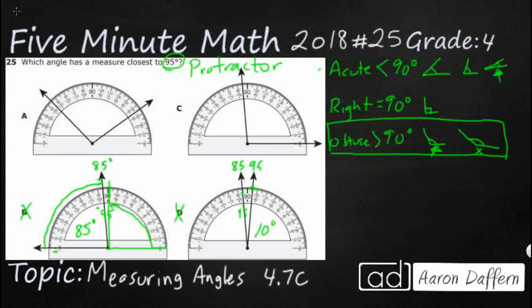So we're down to A or C. Let's start with A. Using both scales: on the outside the angle reads between 40 and 50, so that's 45 degrees, and the other side reads between 140 and 150, so that's 145 degrees. 145 minus 45 equals 100 degrees. Checking the inside: I get 35 and 135, and 135 minus 35 also equals 100 degrees. So A is about 100 degrees — five degrees more than we need.